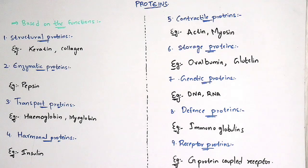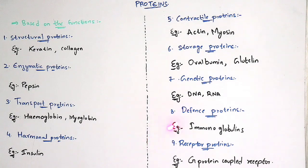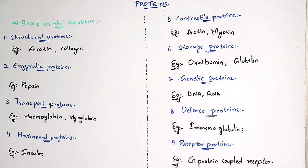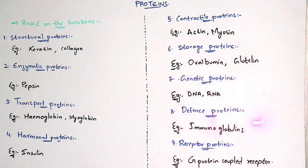The best examples of storage proteins are ovalbumin and gluten. Genetic proteins consist of nucleic acids — examples are DNA and RNA. Defense proteins act as scavengers for our human body; when there is an attack from foreign organisms, defense proteins counter them. The best example is immunoglobulins. The ninth type is receptor proteins, and the best example is the G-protein coupled receptor.